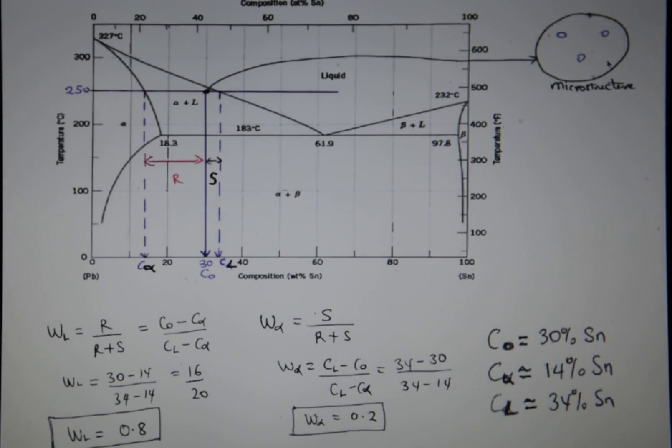And this is how the microstructure would look like. Because you're quite close to the liquidus line, which is this line over here, you would expect that you have more liquid in the microstructure than solid. So this is just an approximate drawing.